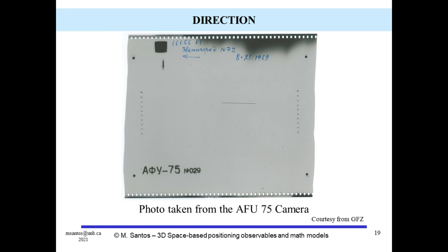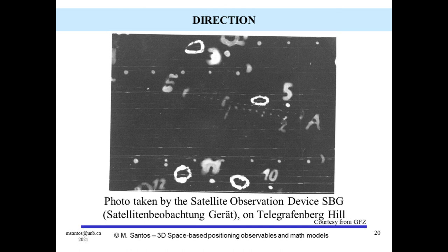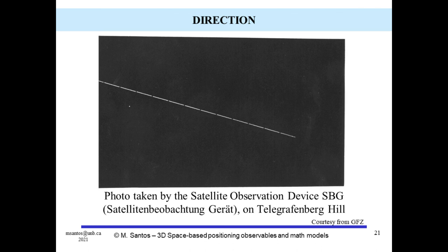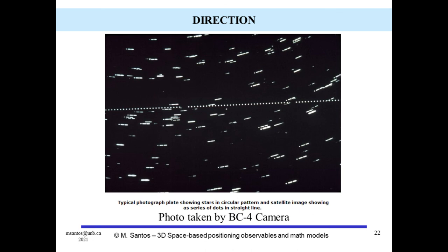Let us look now at actual photographic plates. This one is a photo taken from the AFU-75 camera, where the satellite track on the sky is seen as a gray straight line. Now we can see a photographic plate taken by a station in Potsdam, Germany, using the satellite observation device SBG. We can see the satellite path represented by dotted straight lines and the surrounding stars inside circles. Another plate from the same location shows the satellite as long straight lines, with one star visible as a bright dot at the center-left. Finally, a photographic plate obtained by a BC-4 camera shows the satellite path as a dotted straight line and the stars following a circular pattern.